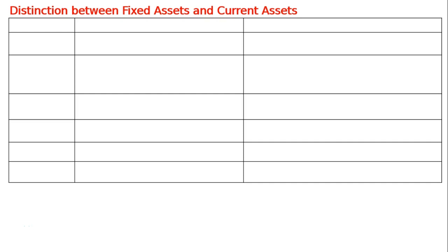Distinction between Fixed Assets and Current Assets. There will be three columns. In the first column, we will have the basis of distinction between Fixed Assets and Current Assets. The second column will be for Fixed Assets. The third column will be for Current Assets.